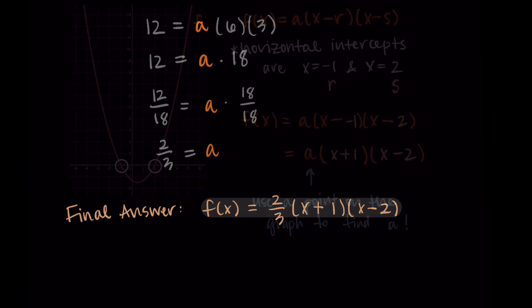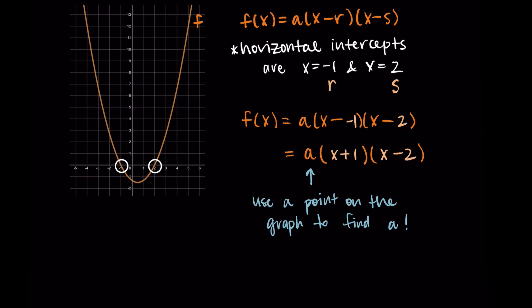So to find factored form from a graph, we look at the horizontal intercepts. We put them in the formula for r and s. Then we substitute in a point that we know on the graph and solve for a.